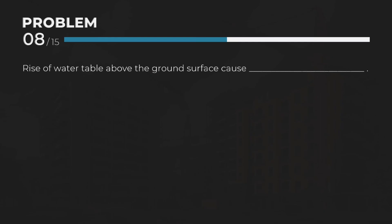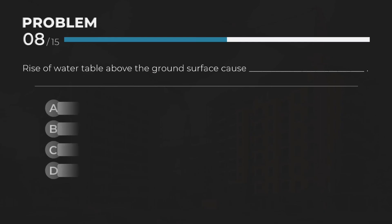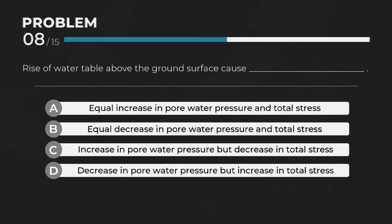Rise of water table above the ground surface causes — Answer: A. Equal increase in pore water pressure and total stress.